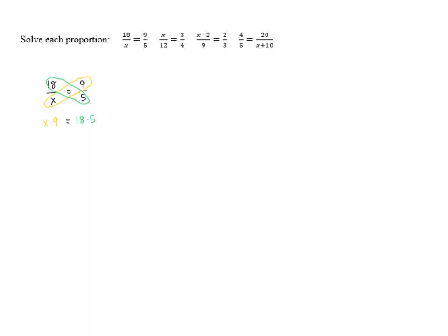So this proportion, 18 over x equals 9 fifths, as an equation is equivalent to x times 9 equals 18 times 5. This is a way for us to solve an easier equation to get the same solution.